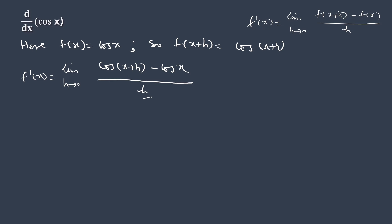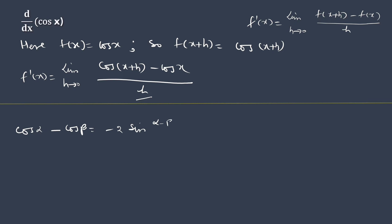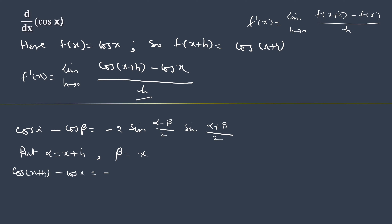Now we shall try to eliminate h from the denominator. For this, we shall convert the difference of two cosines as a product, using the trigonometric identity: cosine alpha minus cosine beta equals minus 2 sine of one-half (alpha minus beta) sine of one-half (alpha plus beta). Now putting x plus h in place of alpha and x in place of beta, and simplifying, we get the value of cos(x+h) minus cos(x) in equivalent product form.